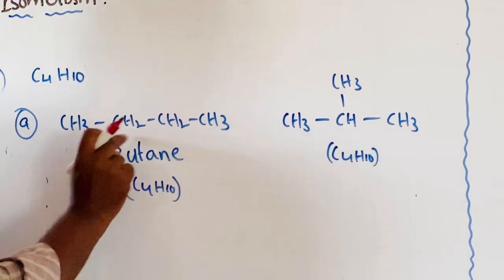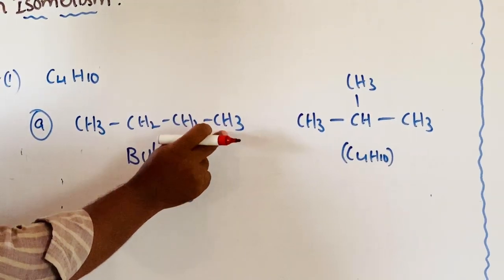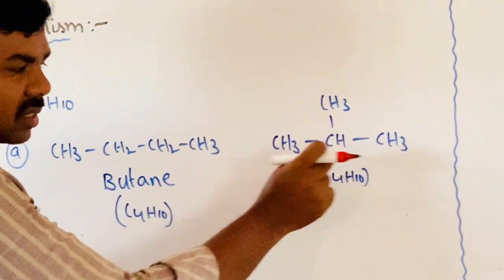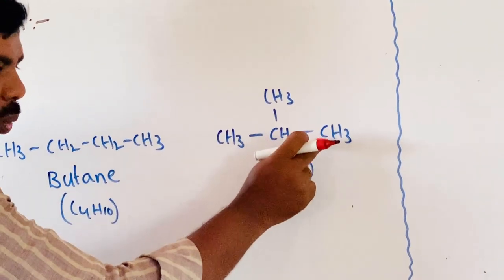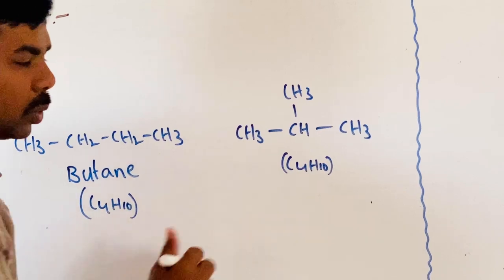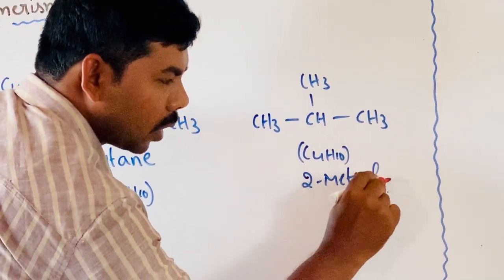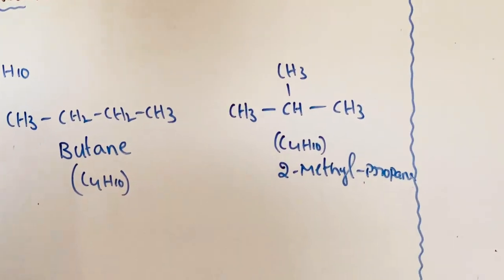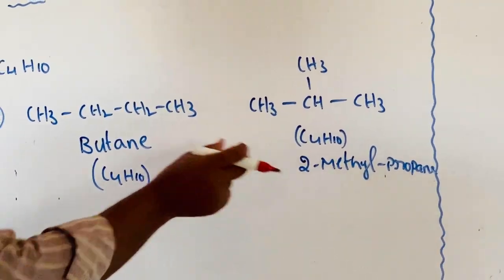The first structure has a long chain of 4 carbons, so the root word is butane; carbon-carbon single bond gives suffix -ane, so the name is butane. The second structure has a long chain of 3 carbons, so the root word is prop-; the second carbon contains a methyl group, giving the name 2-methylpropane.